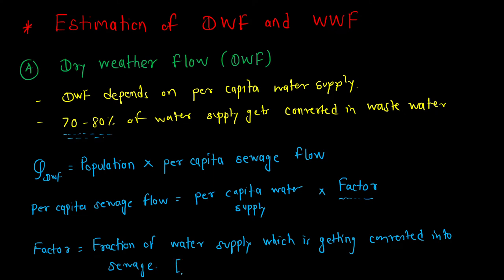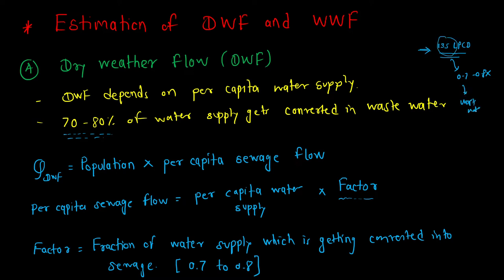The values of the factor are 0.7 to 0.8, and in a problem it will be given to you. When designing a water treatment plant, we use 135 LPCD for low income groups — that is the amount of water distributed to a community. Out of this 135 LPCD, 0.7 to 0.8 times (70 to 80%) gets converted into wastewater, which is called per capita sewage flow. Multiplying the population by per capita sewage flow gives the dry weather flow.